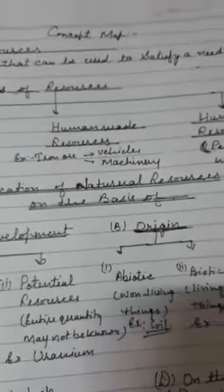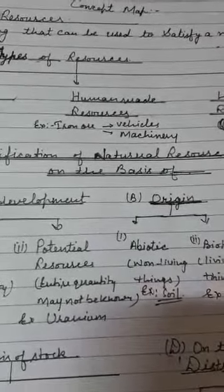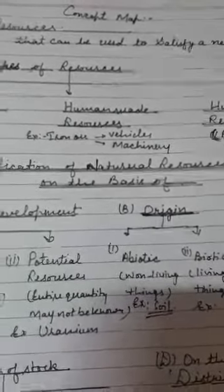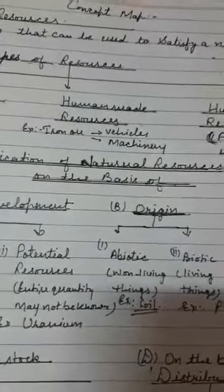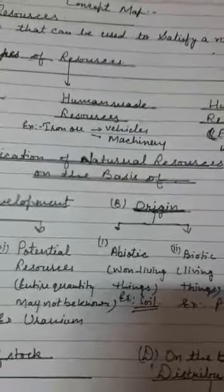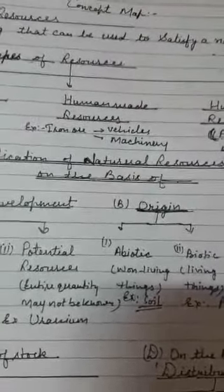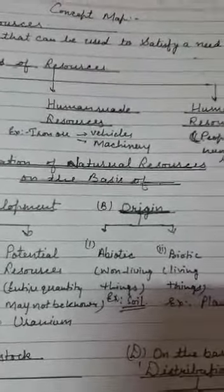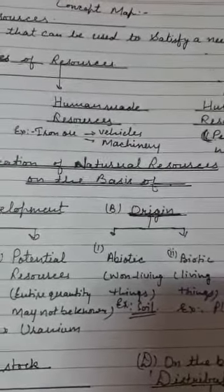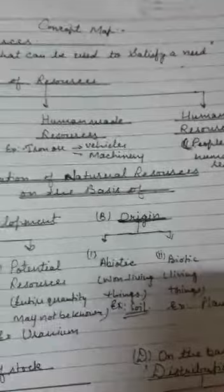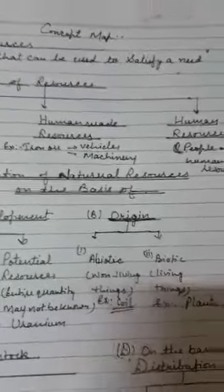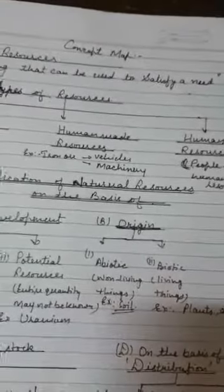Second is potential resources. Potential resources means entire quantity may not be known — puri ki puri quantity ka haan hai aur kis tarhe ki location mein woh hamein pata nahi hota. Just like uranium — presently research is going on, chalu hai research, uranium kahan hai, kis tarhe se hai, aur mostly uses kahan honge inke.